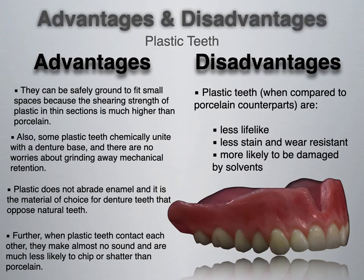When it comes to plastic teeth advantages: they can be safely ground to fit small spaces because the shearing strength of plastic in thin sections is much higher than porcelain. Some plastic teeth chemically unite with the denture base, so there are no worries about grinding away mechanical retention. Plastic does not abrade enamel and is the material of choice for a denture opposing natural teeth. When plastic teeth contact each other, they make almost no sound and are much less likely to chip or shatter.